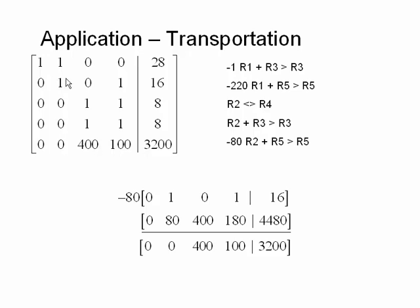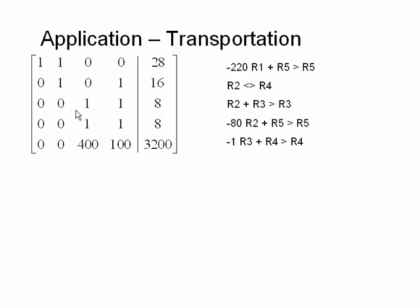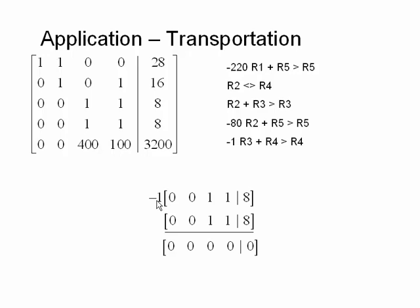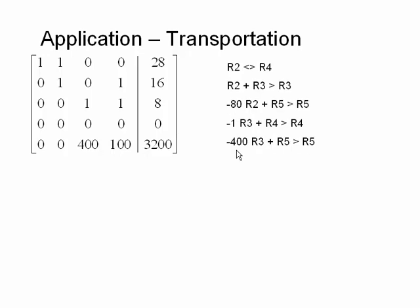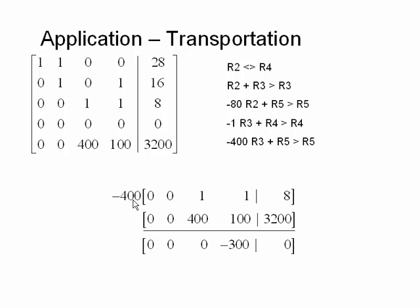Now we have an entire row of zeros, which might make you think this is a dependent system — but what's left above is in reduced row echelon form and we can read off each variable. A dependent system would occur if we couldn't read off one of them. Reading the matrix: x1 = 12, x2 = 16, x3 = 8, and x4 = 0.